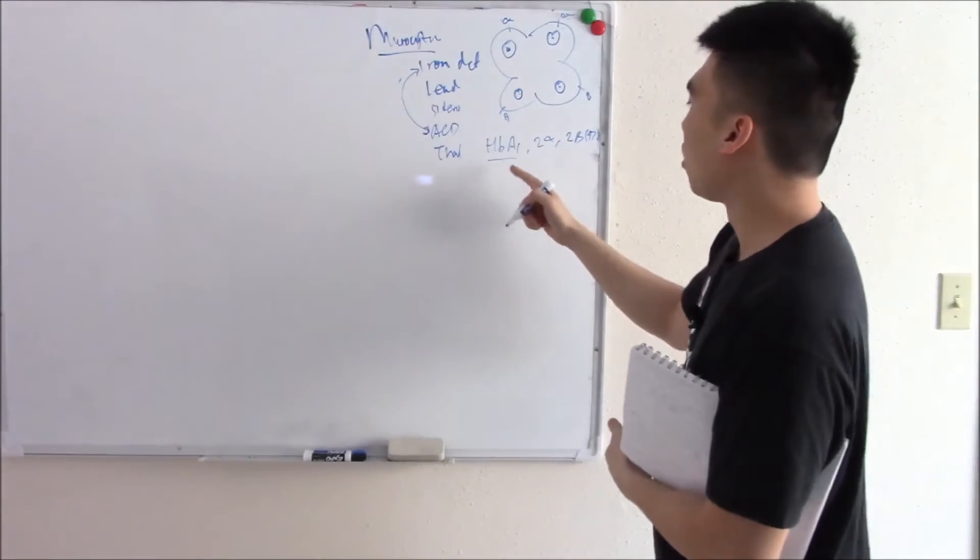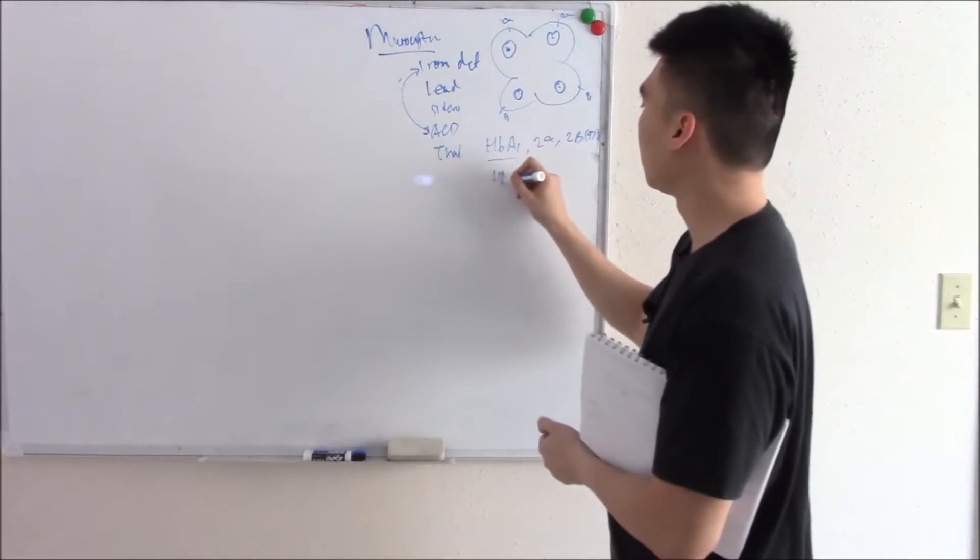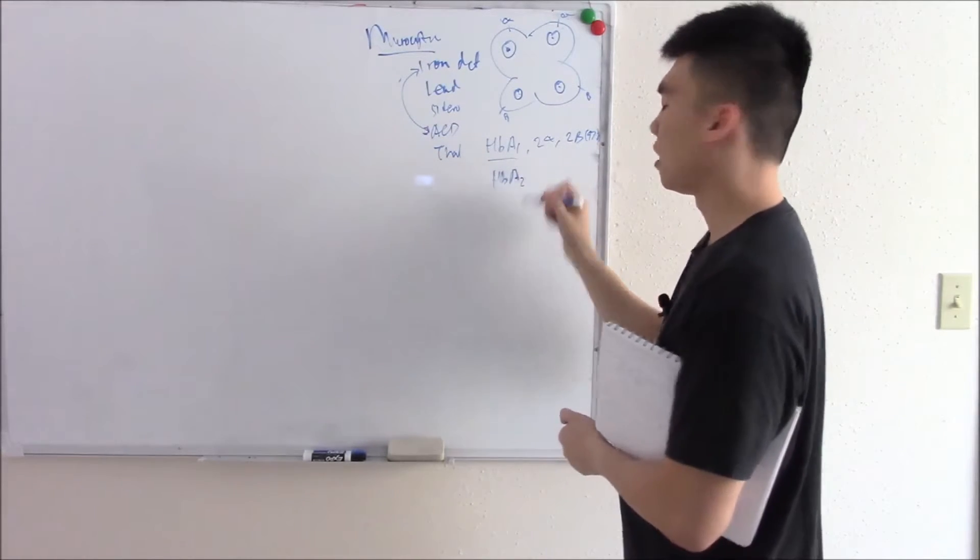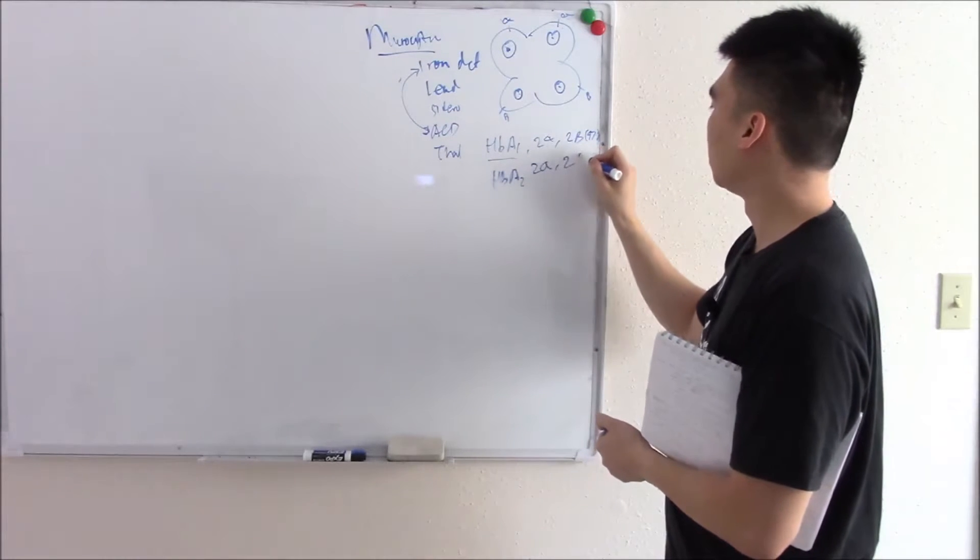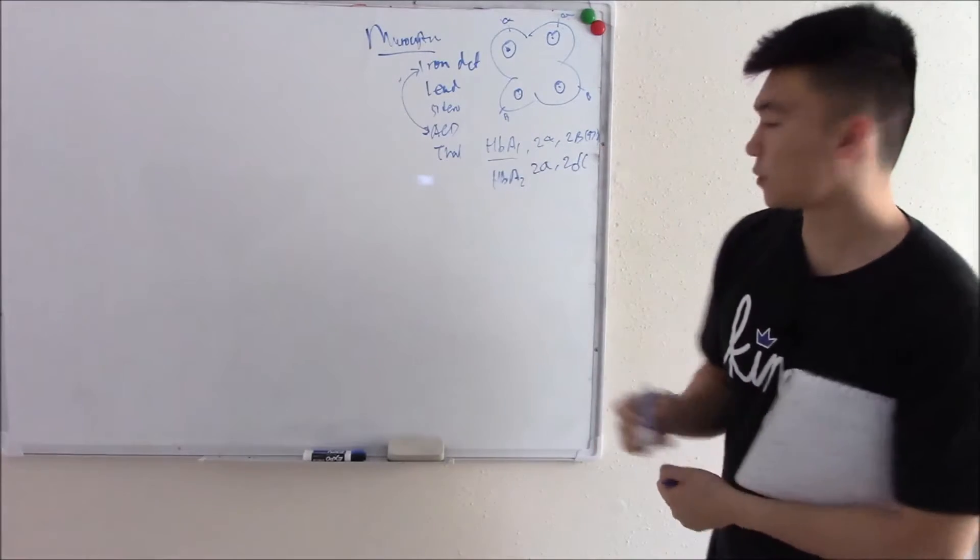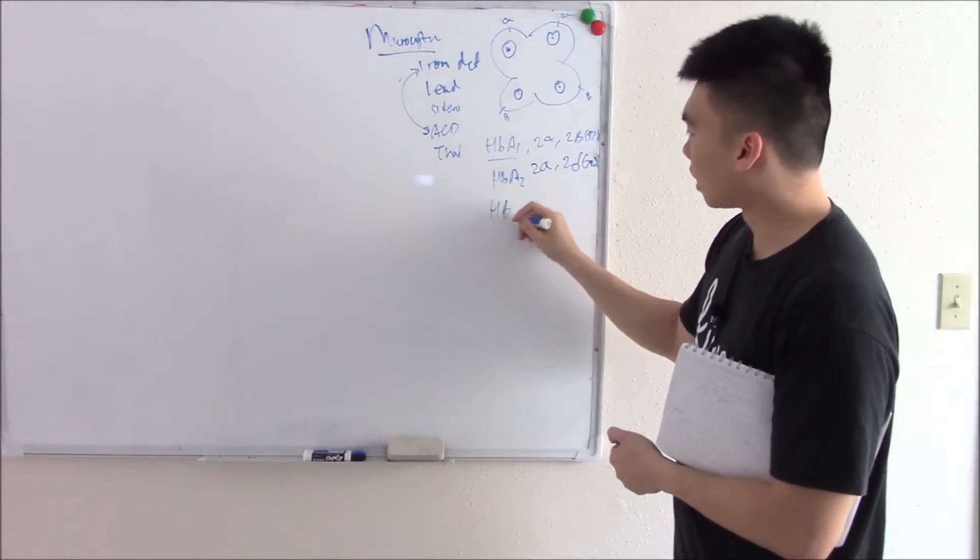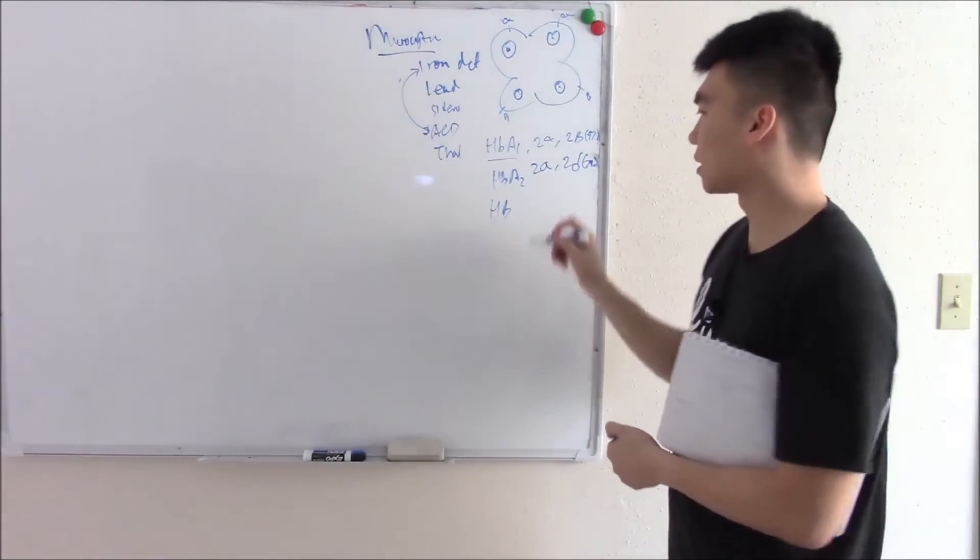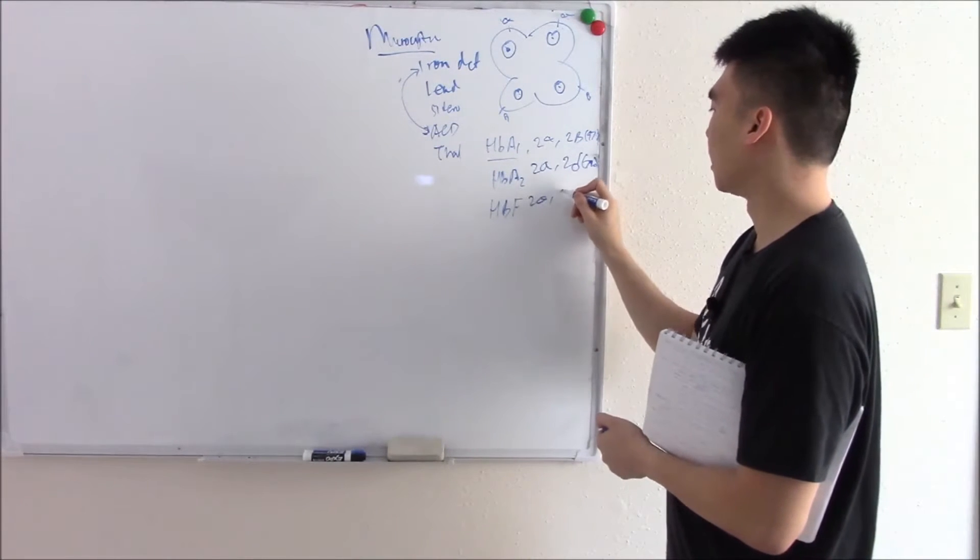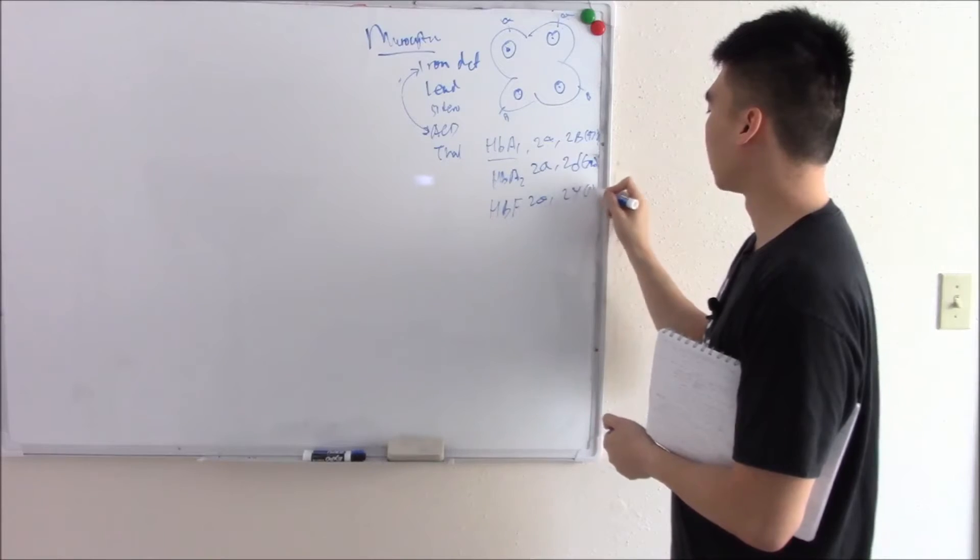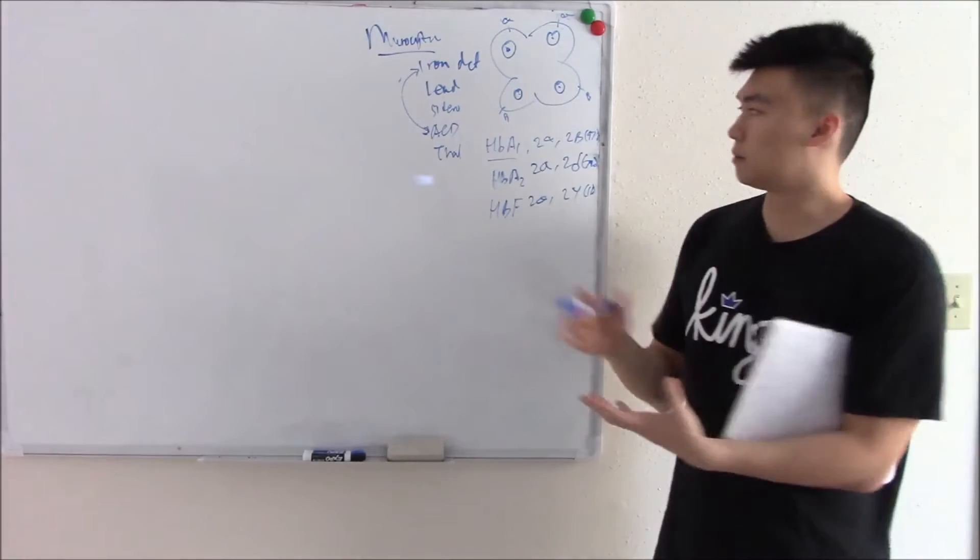What makes up the other 3%? There's a normal variant of HbA1. That'd be your HbA2. What makes up HbA2? 2-alpha, 2-delta. And that makes up about 2%. And then our last 1% is the remnants of our fetal hemoglobin. What makes up fetal hemoglobin? 2-alpha, 2-gamma.